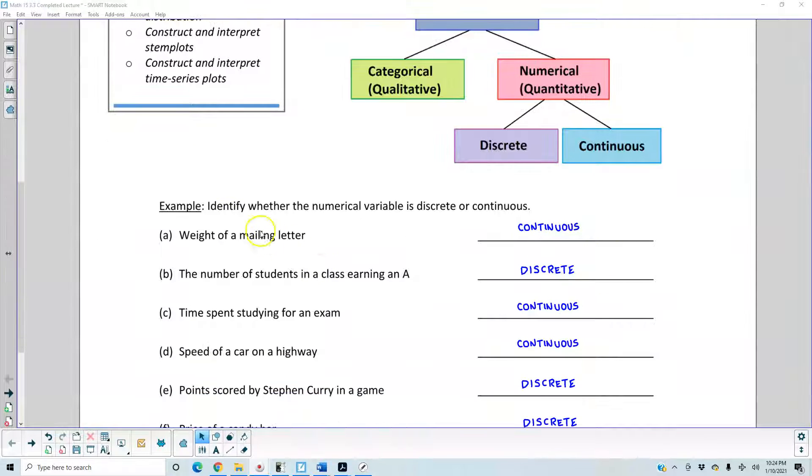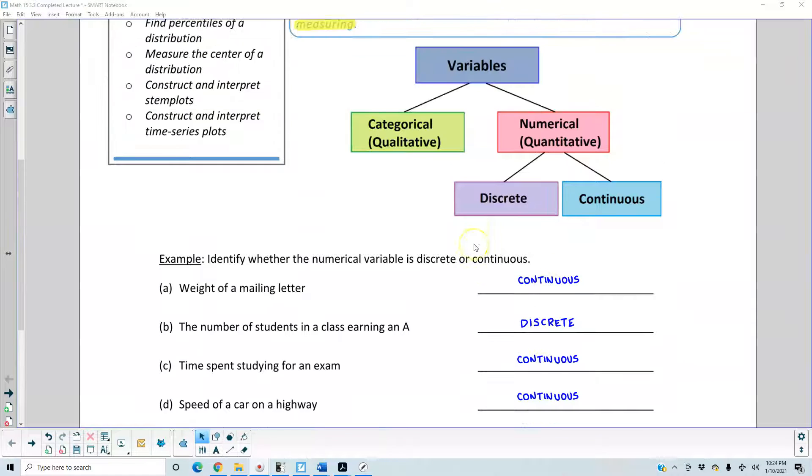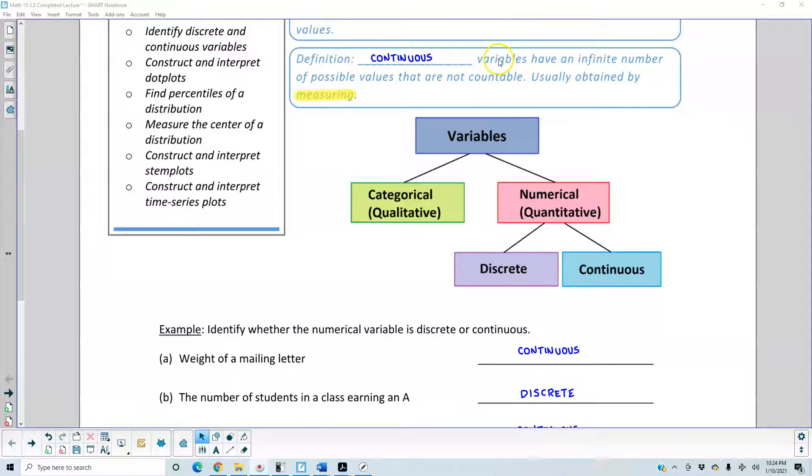For example, we want to identify whether the numerical variable is discrete or continuous. The weight of a mailing letter is continuous. Because again, what does continuous mean? These are variables that have an infinite number of possible values that are not countable.